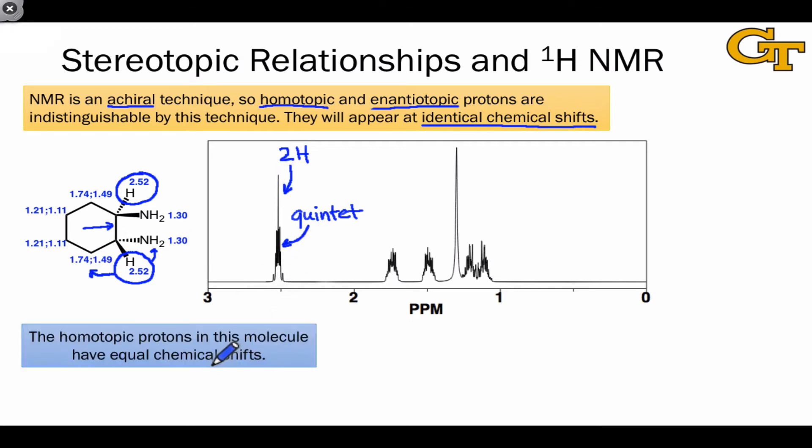The main point, though, is that the homotopic protons in this molecule have equal chemical shifts. And we can see other sets of homotopic protons implied at the carbons based on these chemical shifts that are listed for the other protons.